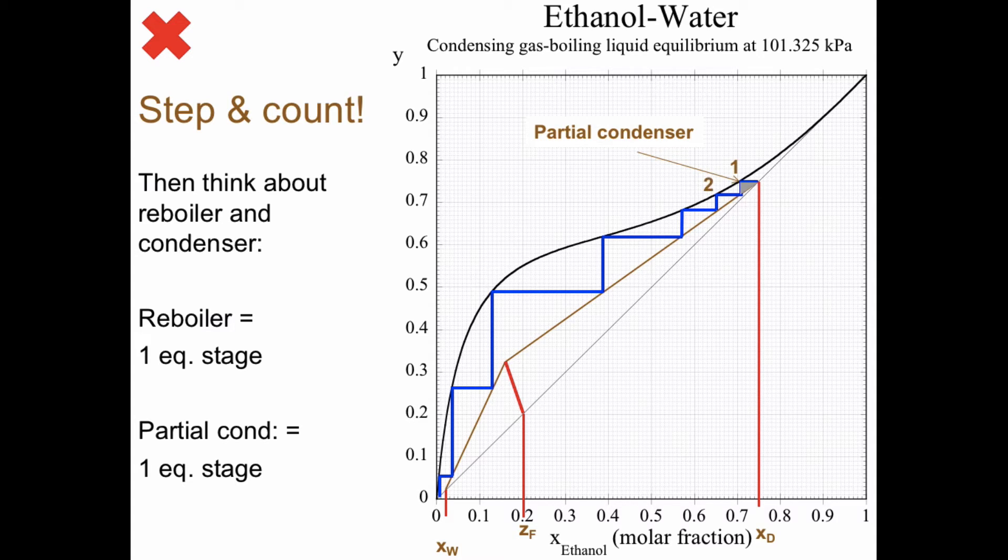And totally we have one, two, three, four, five, six, not entirely seven, so more than six and less than seven equilibrium stages in total.